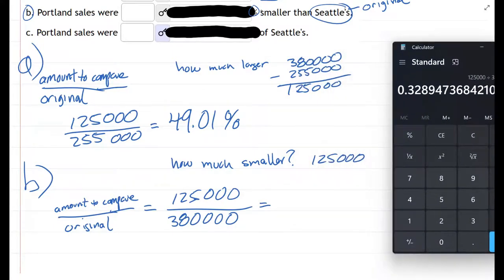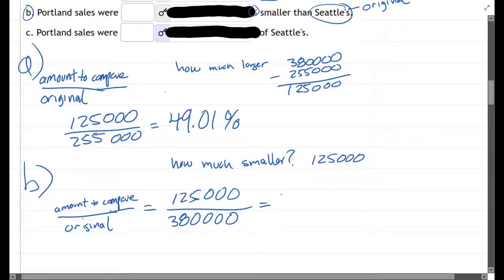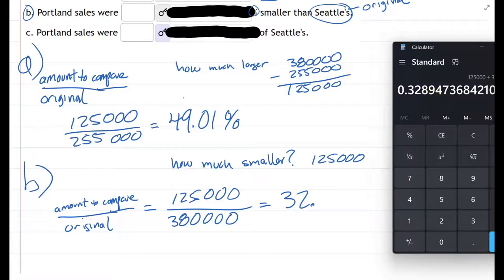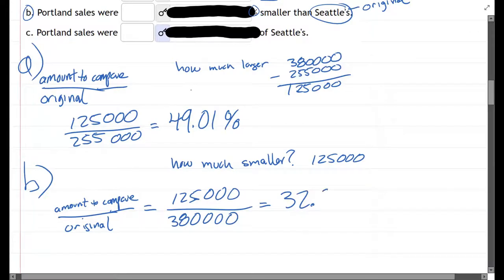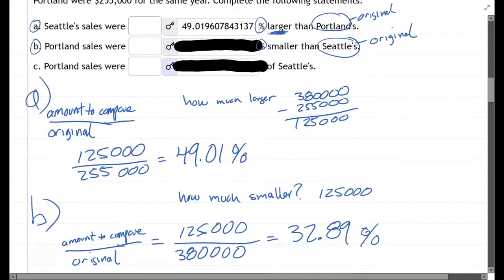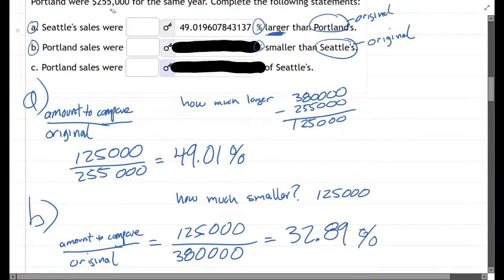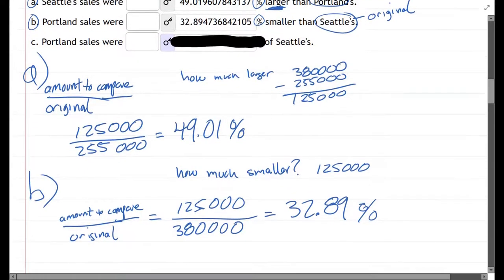We turn this into a percentage by moving the decimal over. So this is 32 point 8, 9 — and expressing it as a percent gives us the answer for Part B, which we uncover to confirm.